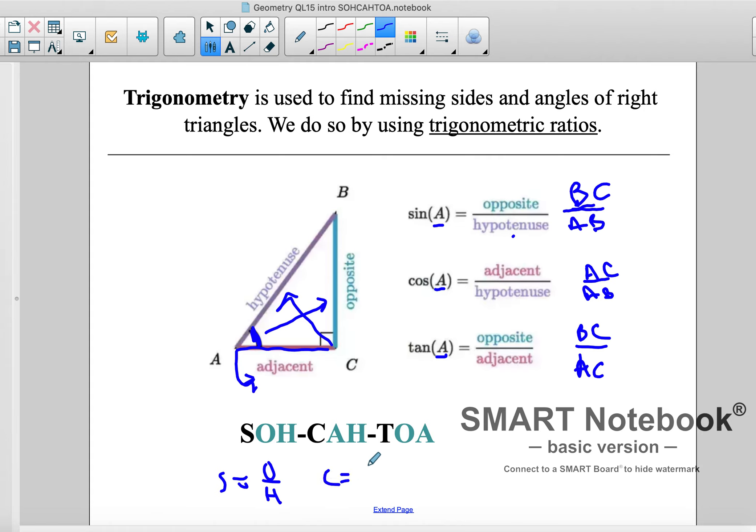Cosine is adjacent over hypotenuse, again, just like we have there. And tangent is opposite over adjacent. This is what we use to remember all of these ratios. So SOHCAHTOA.